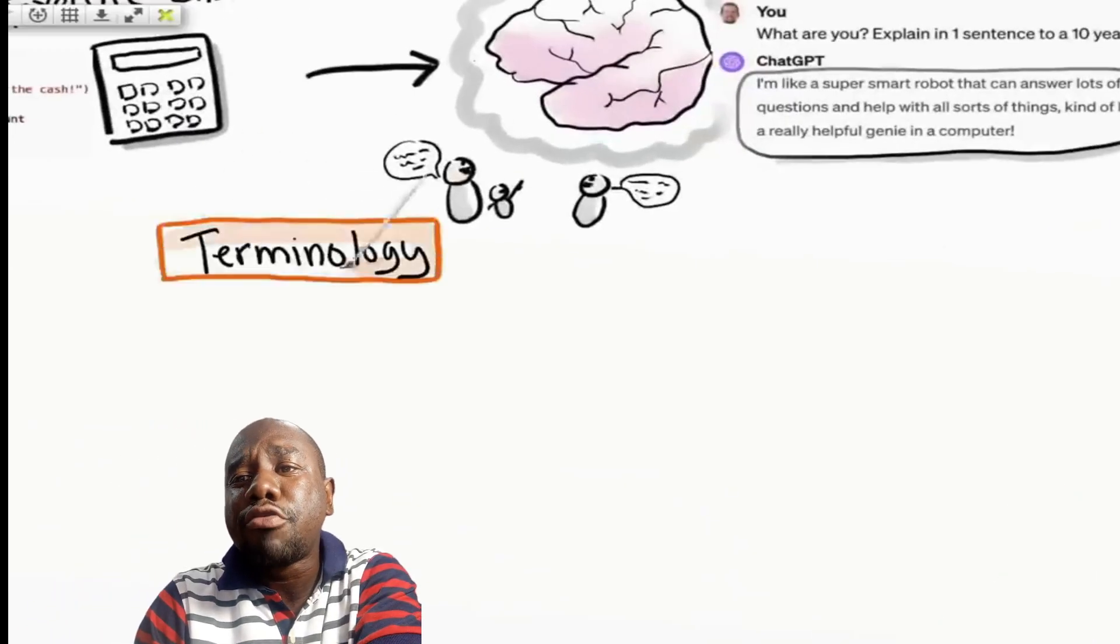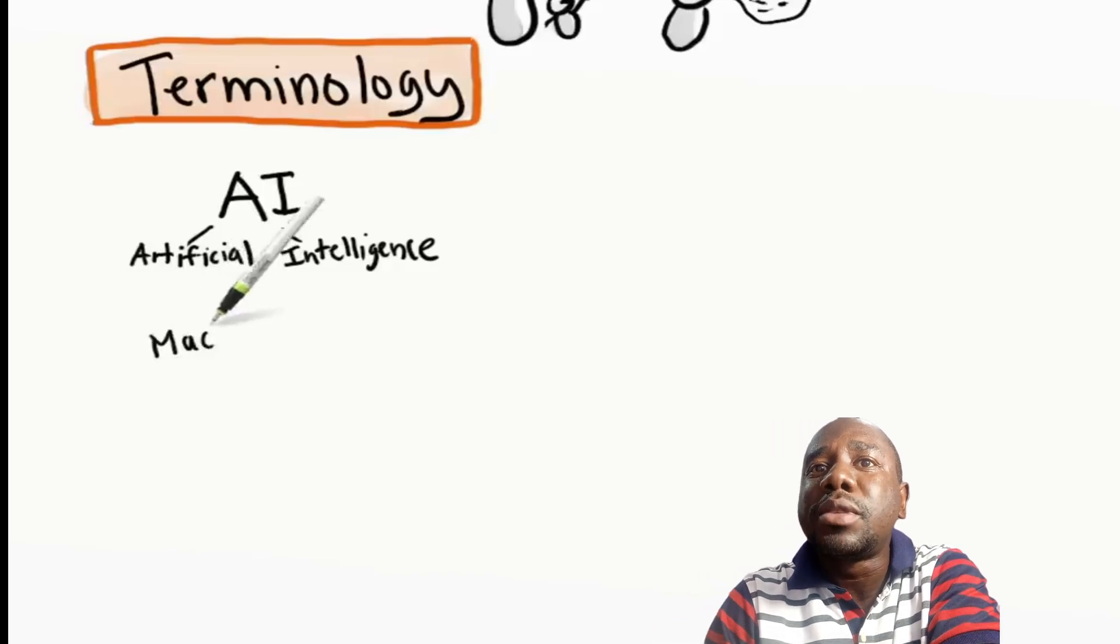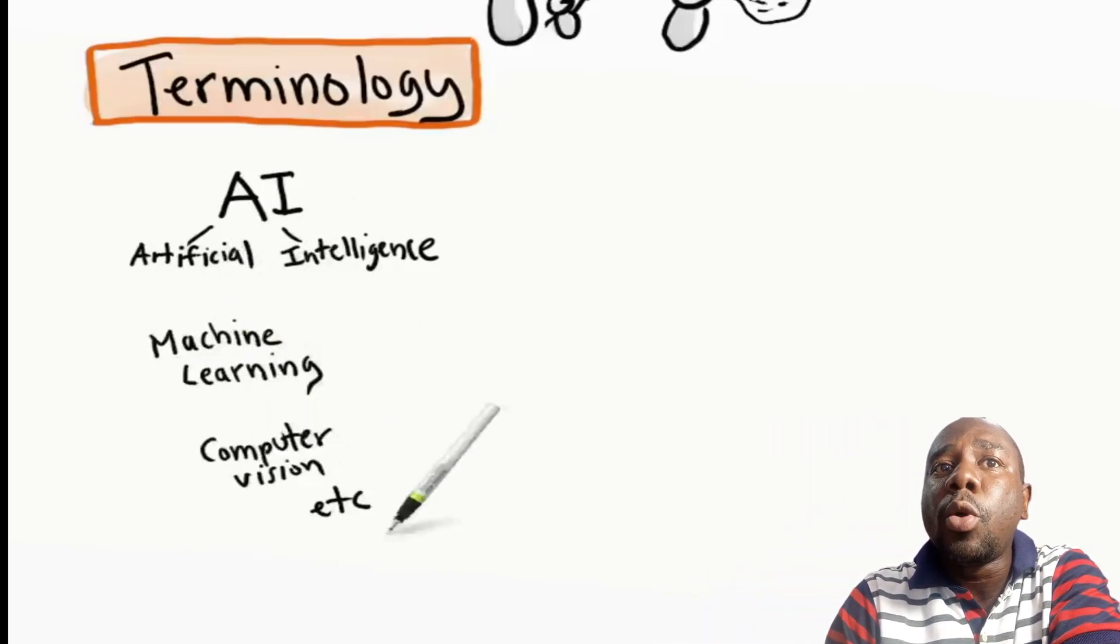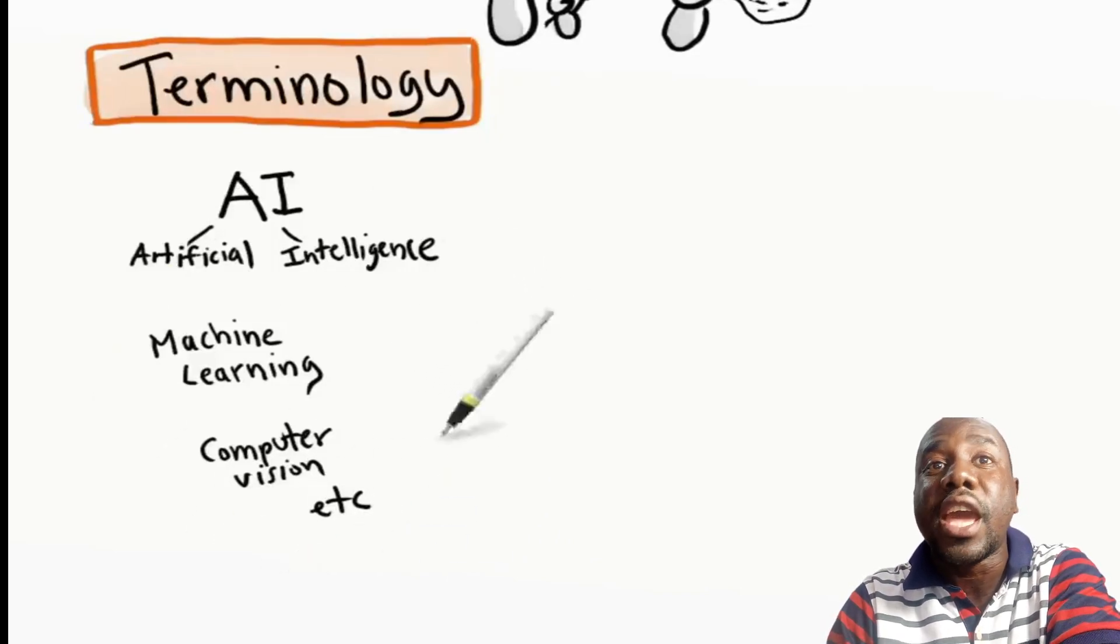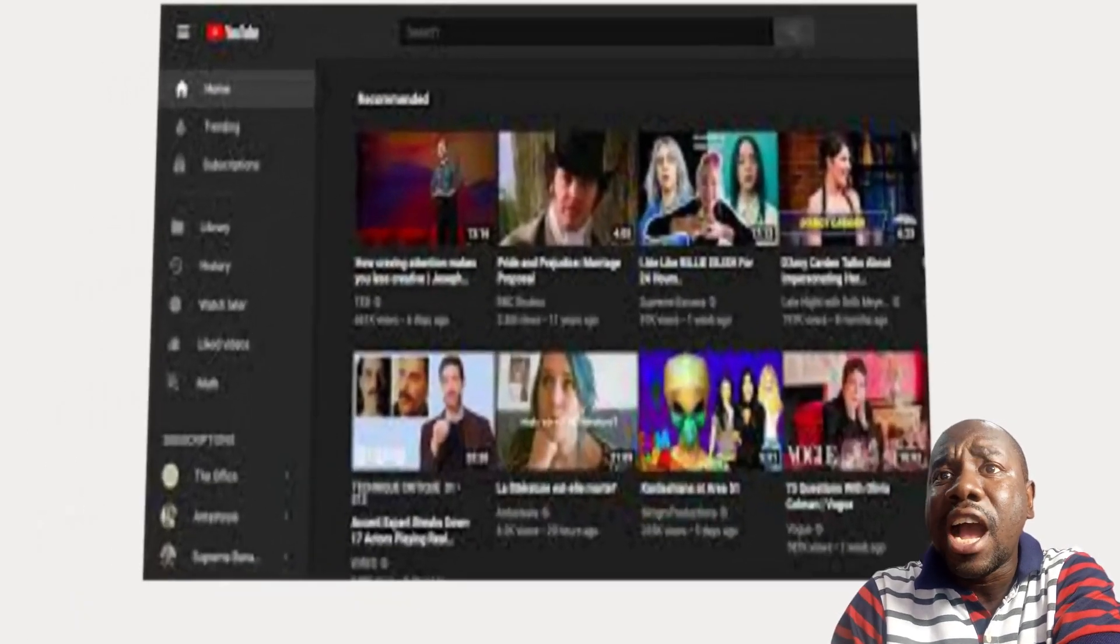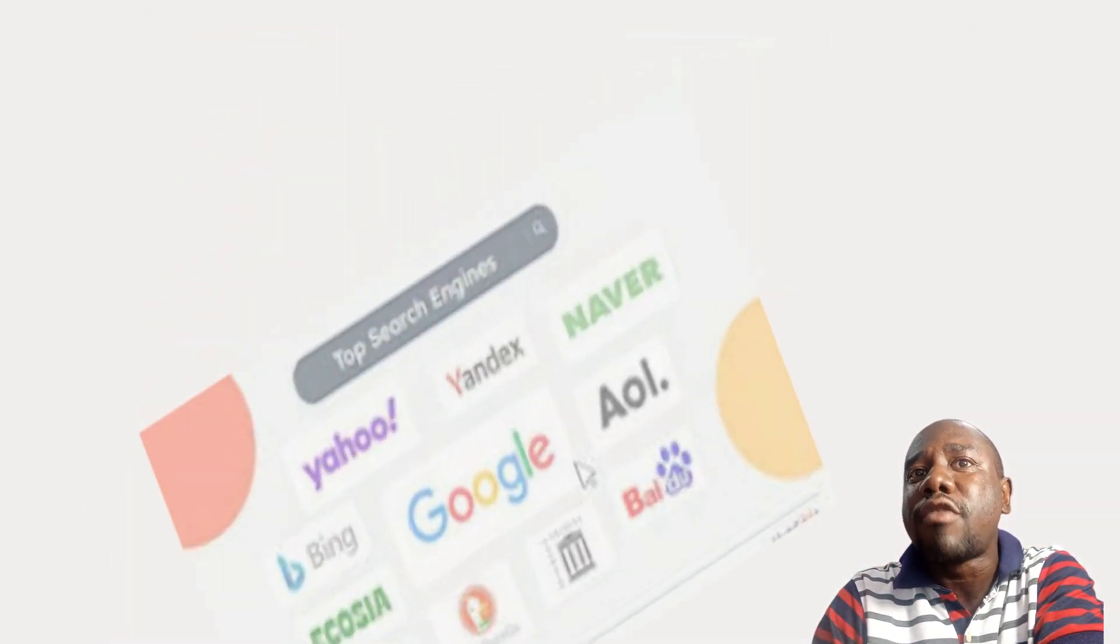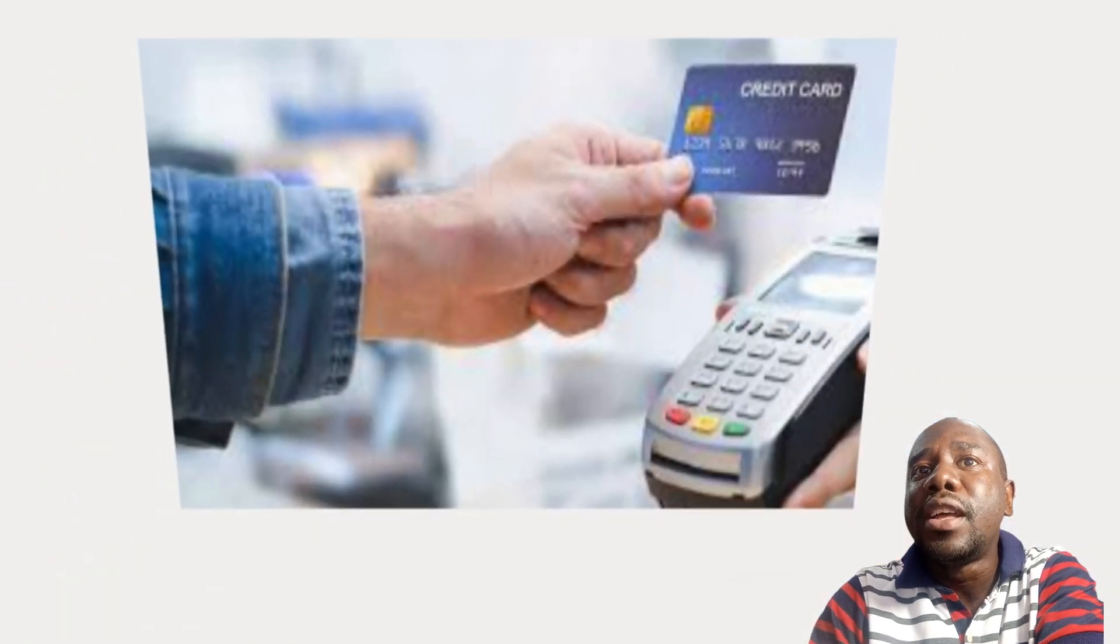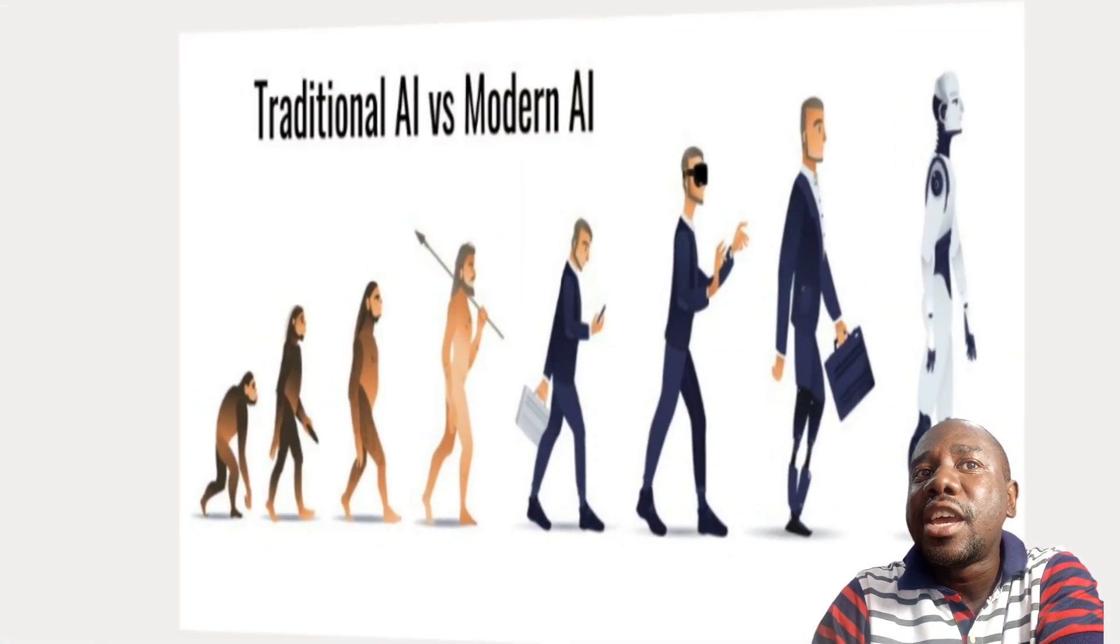Now, enough of the rhetoric. Let's clarify some terms. As you probably know, AI stands for artificial intelligence. Machine learning and computer vision have been around for decades. Whenever you see a YouTube recommendation, a web search result, or a credit card transaction that is approved, that is traditional AI in action.